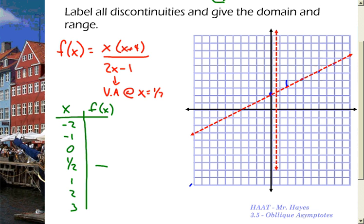You're going to plug them into the equation and find points to plot. If I plug in a 0, I get 0. If I plug in negative 1, I get negative 1 times 3 on the top, so that's negative 3 over negative 3, so that's 1. I'm going to plug in negative 2.